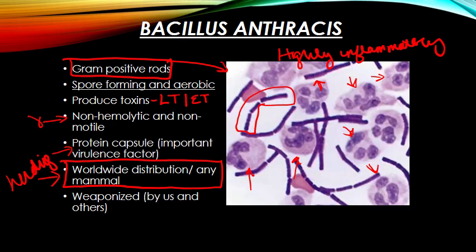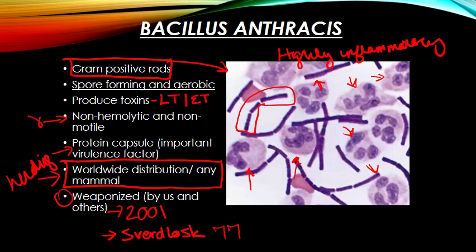Bacillus anthracis has been weaponized. We know this based on the events of 2001 when spores were sent around the US, and also because the Sverdlovsk bioweapons facility in the Soviet Union exploded, infecting 77 people with inhaled Bacillus anthracis spores — demonstrating its weapon potential.